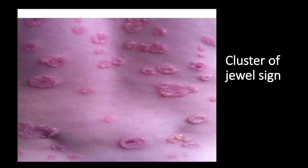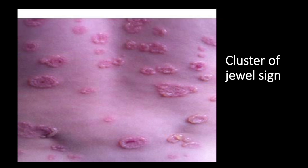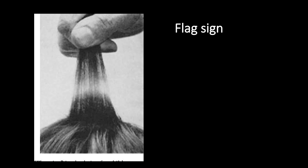Cluster of jewels sign, also termed string of beads or rosette sign: it refers to an early stage of chronic bullous disease of childhood when new lesions appear at the margin of older ones, resembling a cluster of jewels.